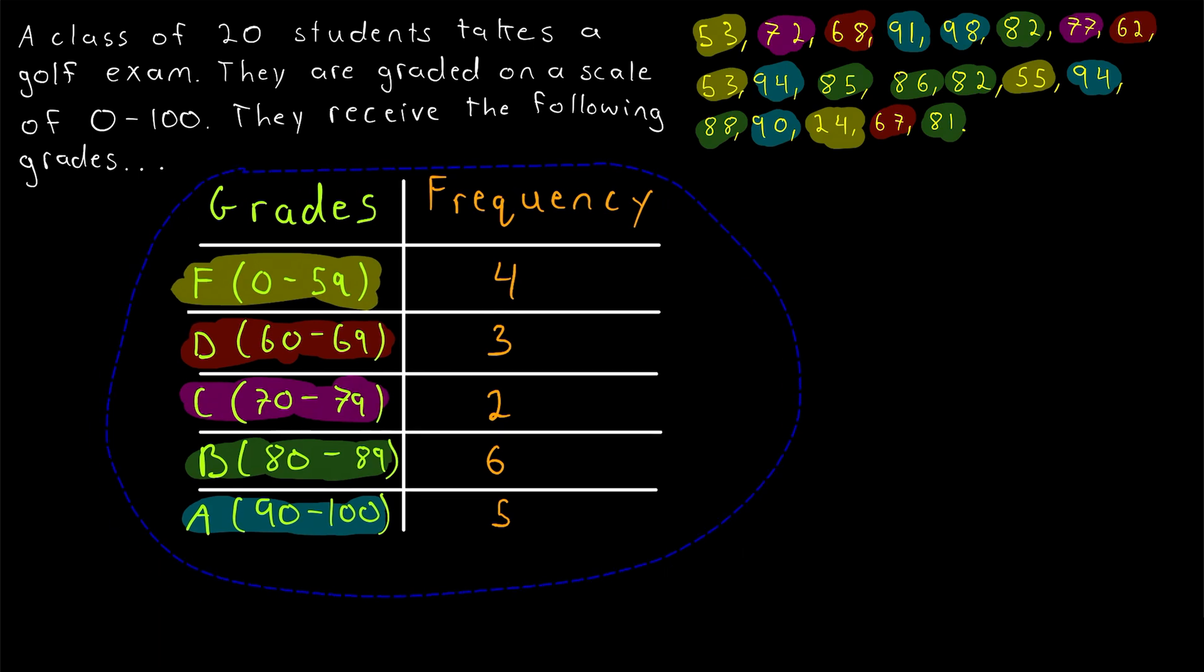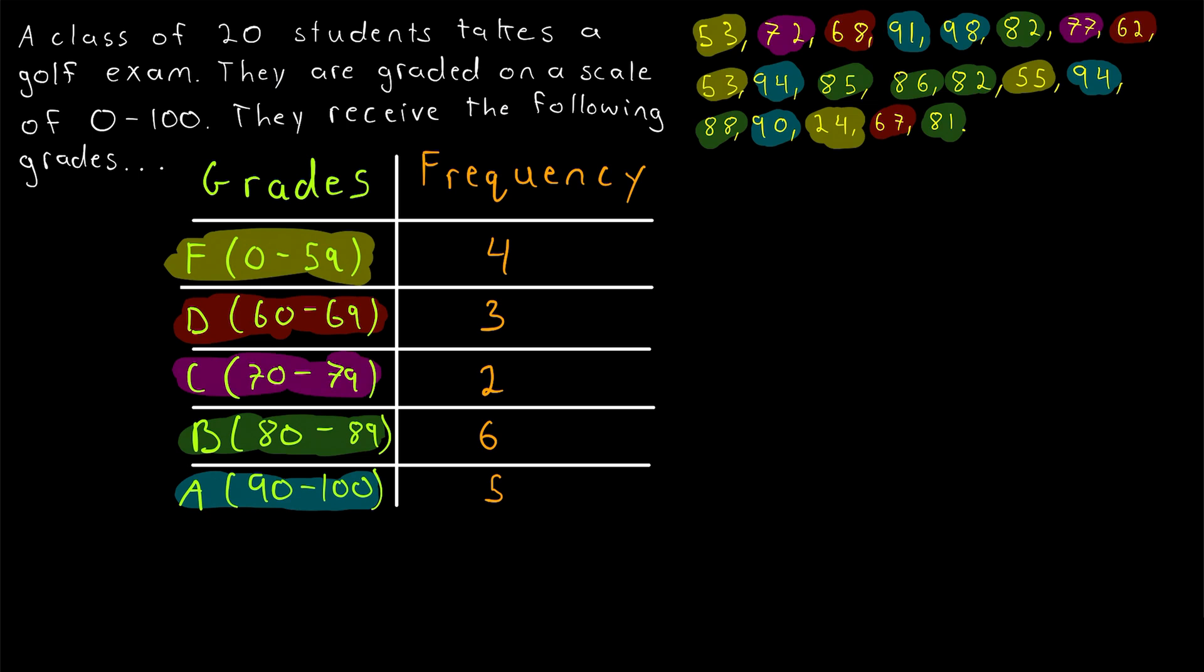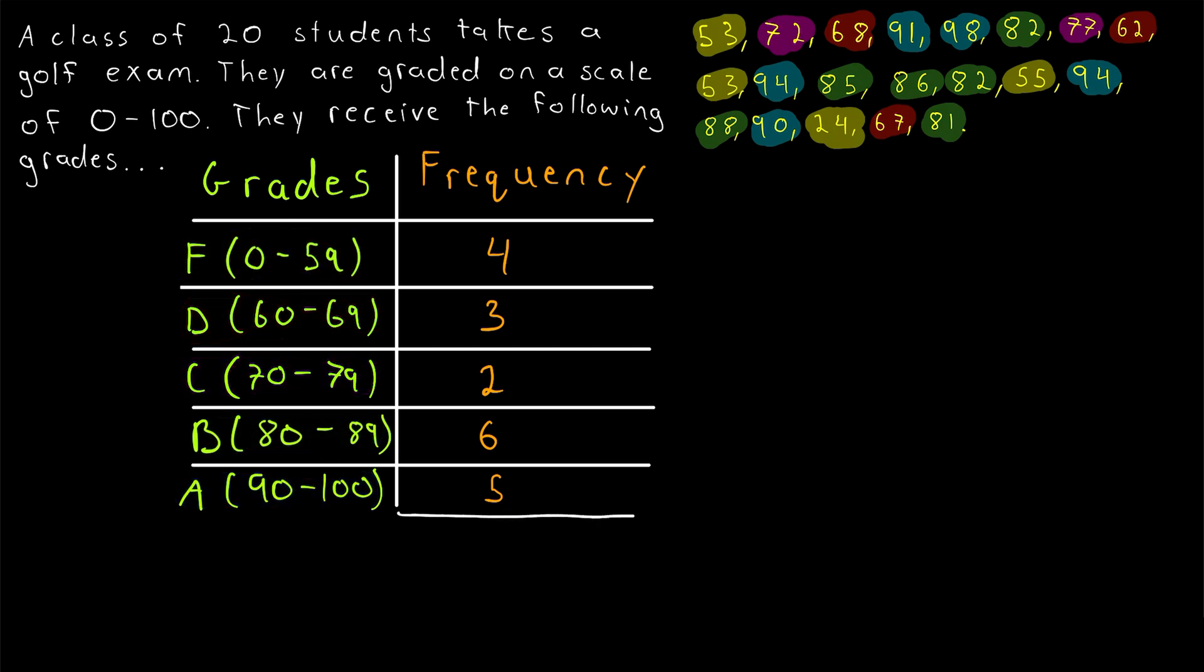Now a quick check to make sure that we counted all of the data points. Let's just draw a bar down here at the bottom of the frequency table. Underneath all of that we'll put the total number of data points. So we'll add up all of these. And it should be 20. Because there were 20 students. There were 20 exam grades. 4 plus 3. That's 7. Plus 2 is 9. Plus 6 is 15. Plus 5 is 20. And so the total is 20 as we expect.